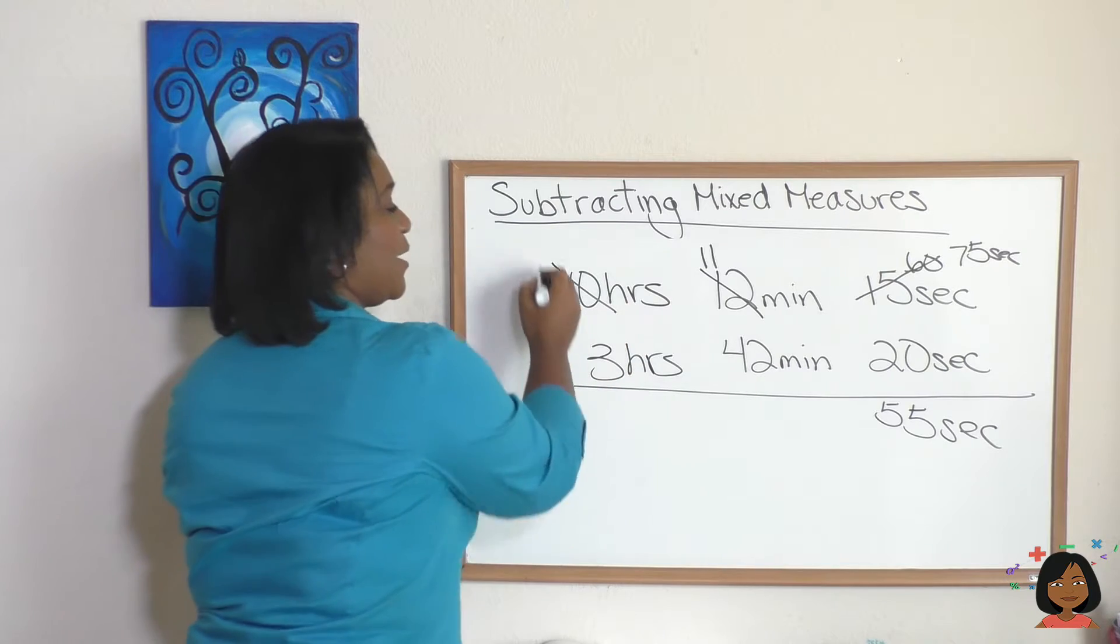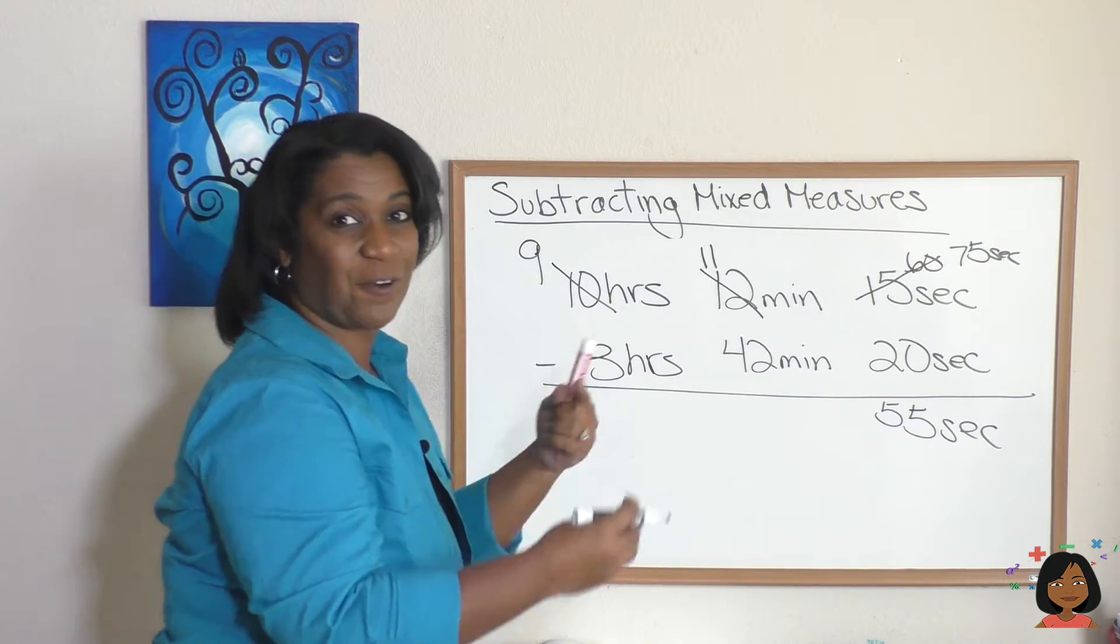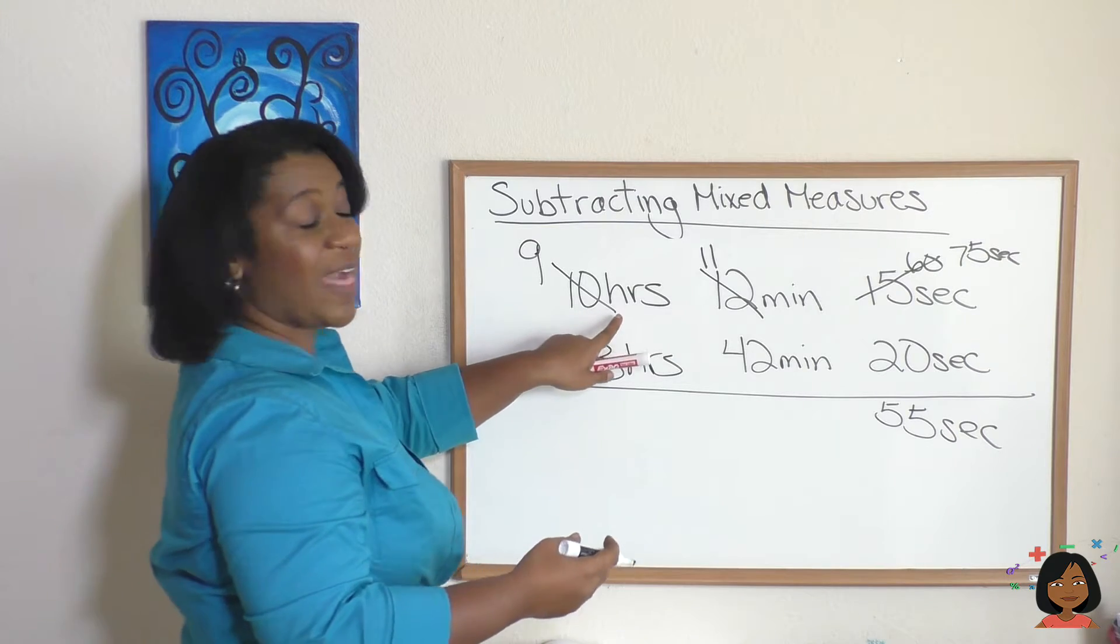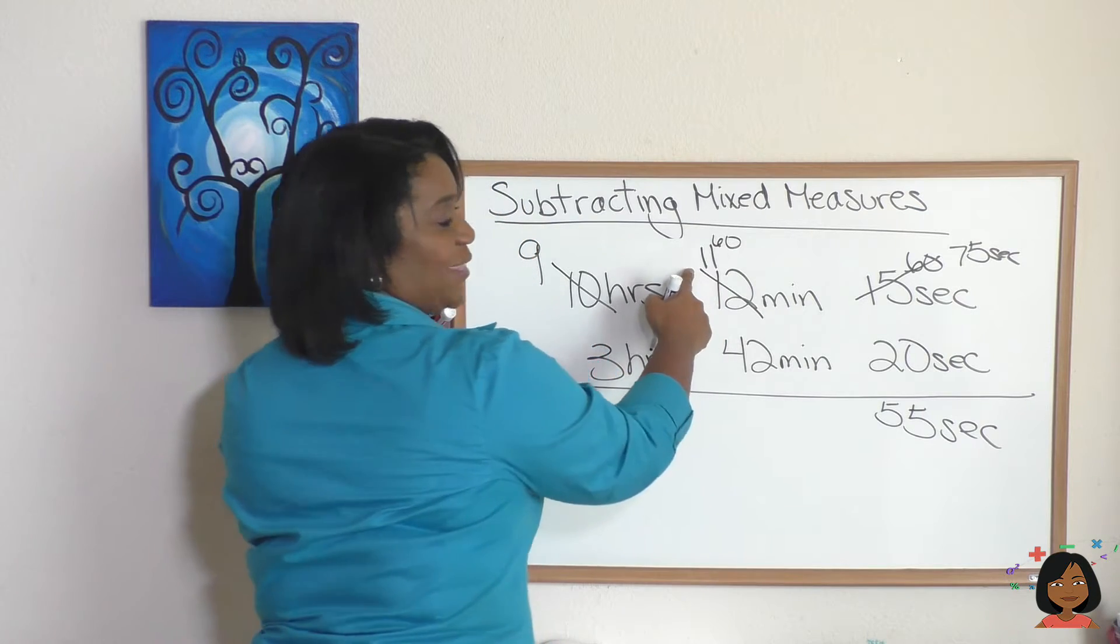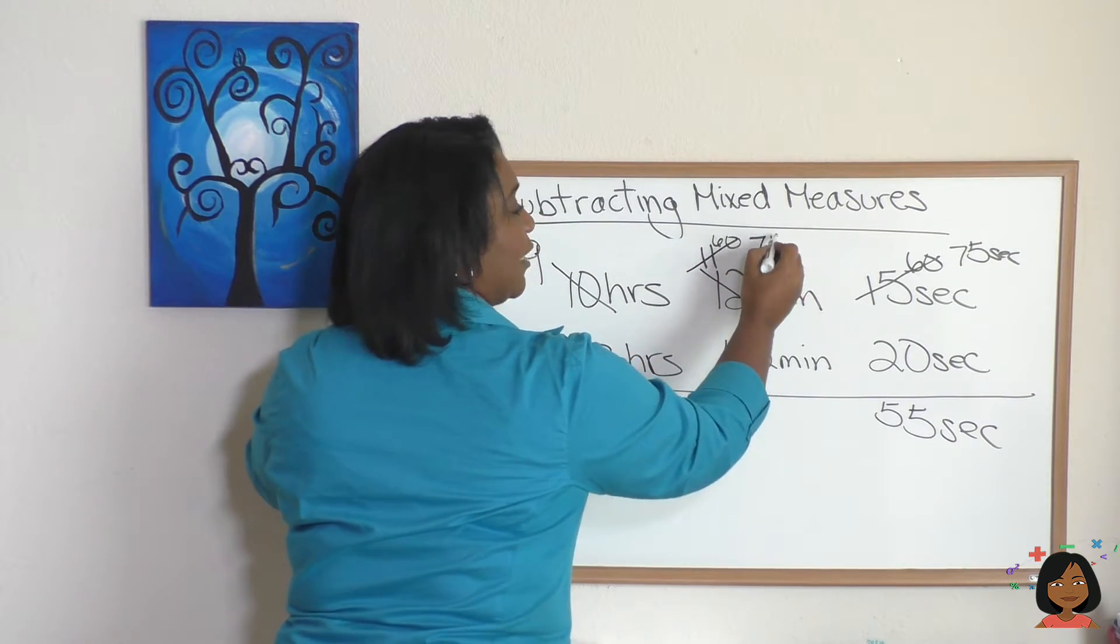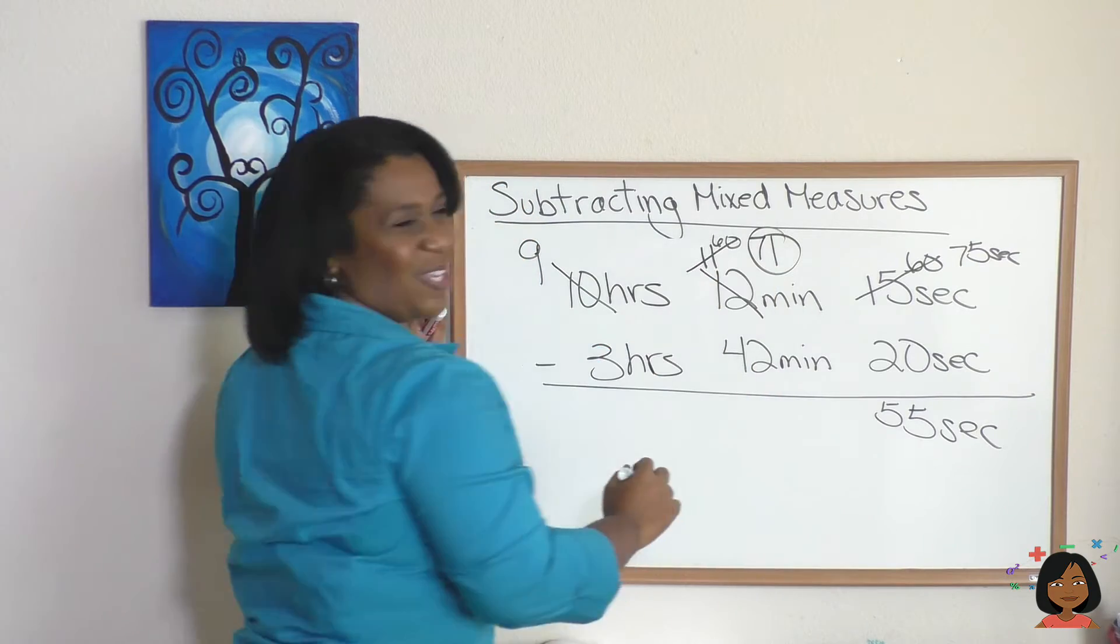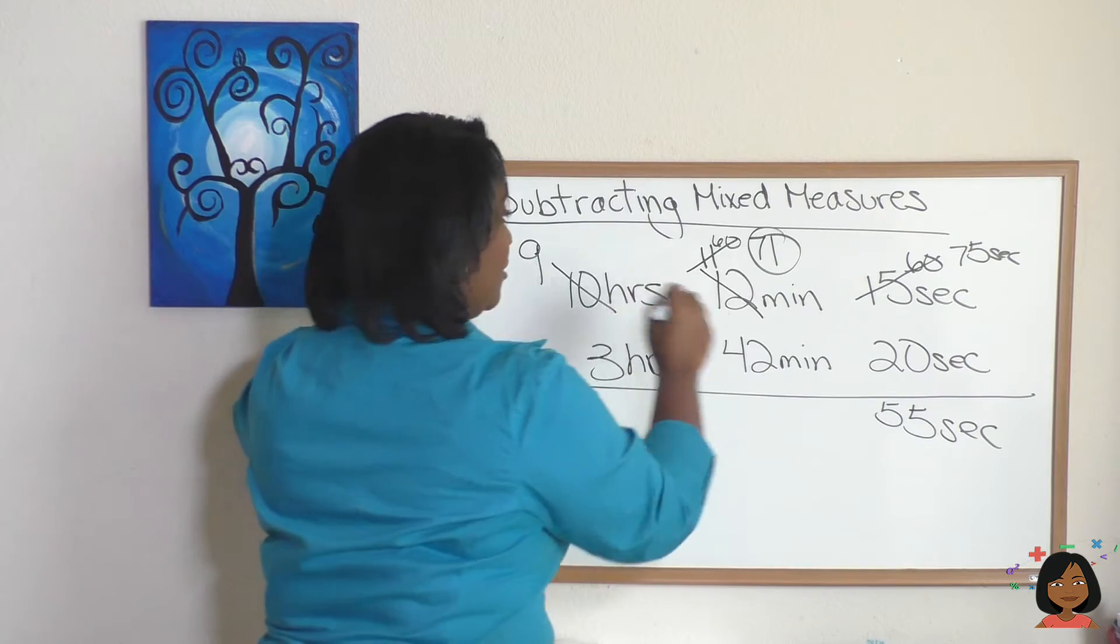Cross out our 10, make it 9, bring 1 over. We're gonna convert it to minutes. Well, we know that 1 hour is 60 minutes, so let's add 60 to the 11 that's there, which gives us 71. I know it's getting messy, but I'm gonna highlight it just so you can see it. 71 subtract 42 is going to be 29 minutes.